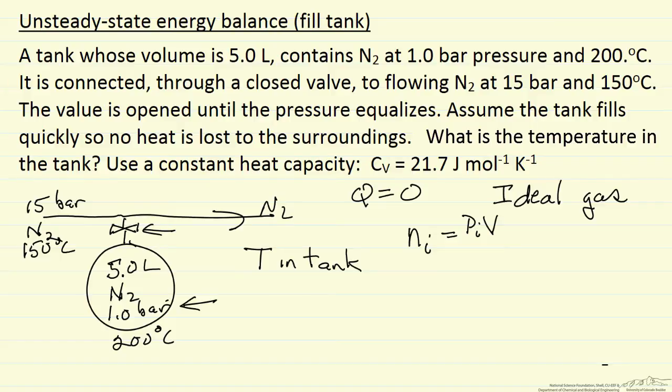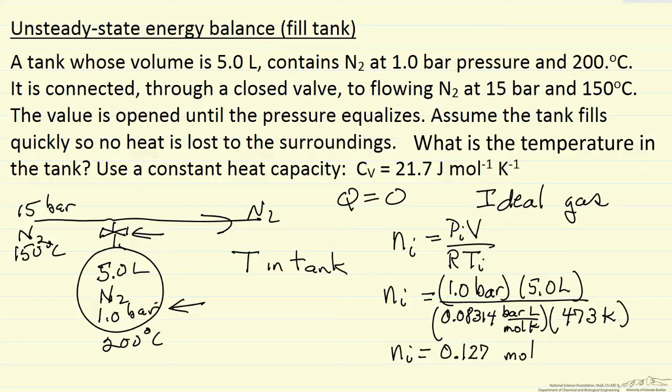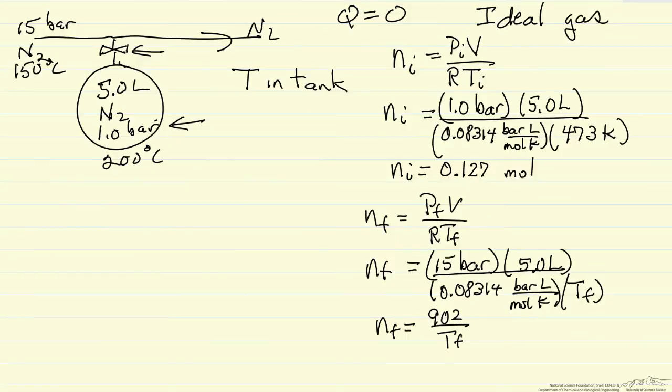That's the initial pressure in the tank. The volume of the tank is fixed, and then the initial temperature in the tank. Let me put these numbers in and calculate the number of moles at the start. We calculate the number of moles initially. We can now write the number of moles finally again using ideal gas law in terms of that final temperature, which we don't know yet. That's what we're trying to calculate.